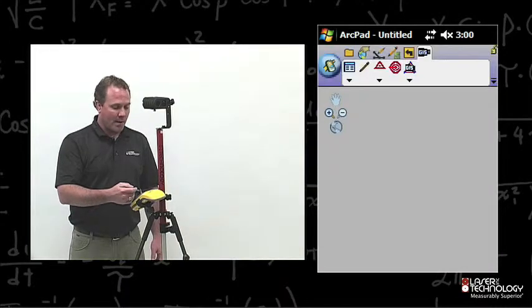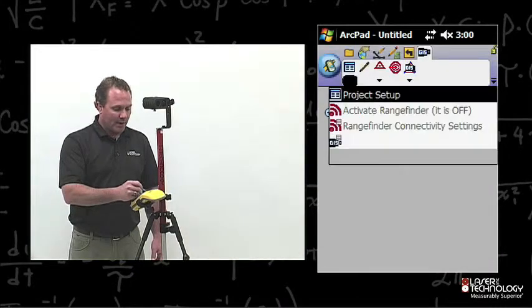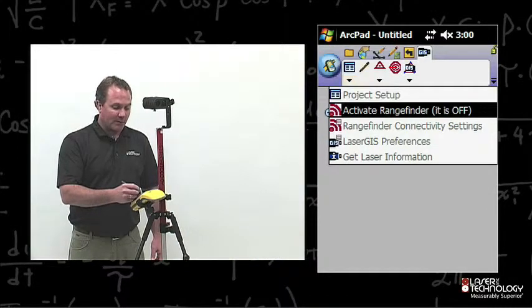Press OK, and we're back to the main map. We want to go back into the Project Setup and activate the Range Finder.